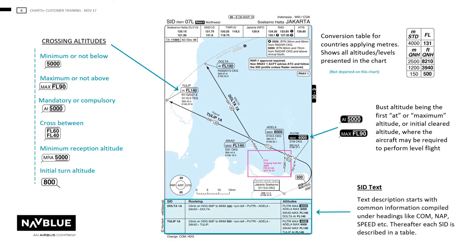The SID text contains a detailed routing for your required SID, identifying any speeds or altitudes on each waypoint. The text description will be produced only if it is published officially. The text will be in a table consisting of columns with a heading, and the heading may vary depending on the procedure.